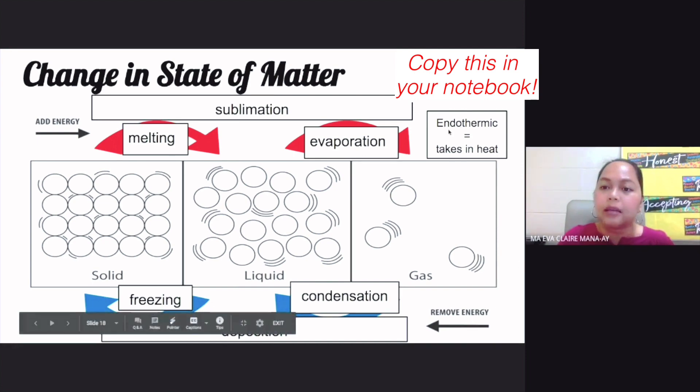Now, endo, the prefix endo in science, this means going inside. And thermic, of course, this means thermos or heat. It can mean heat. It can mean temperature. So endothermic, this means matter takes in heat.